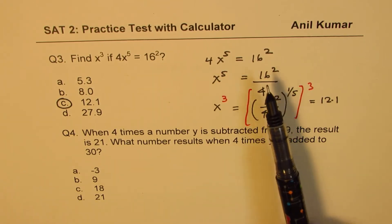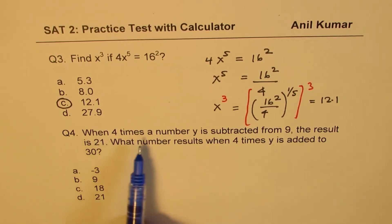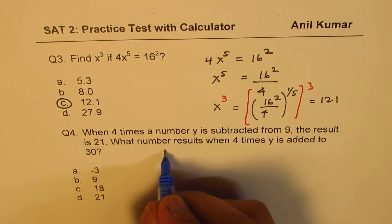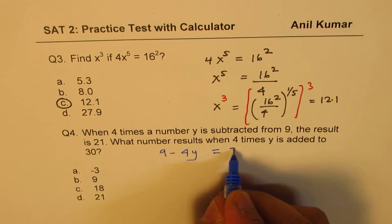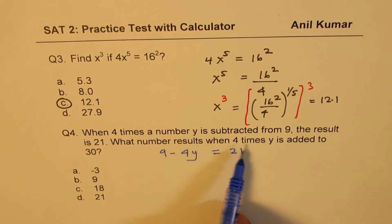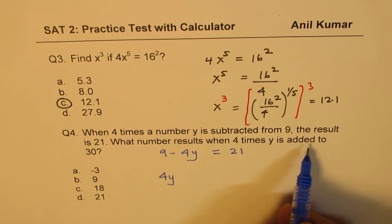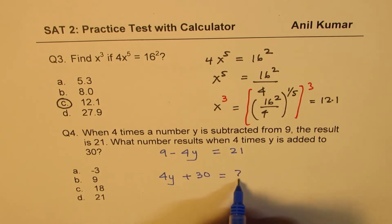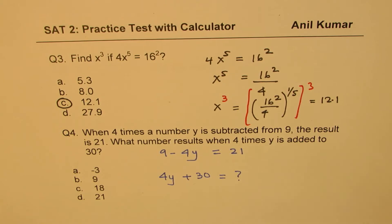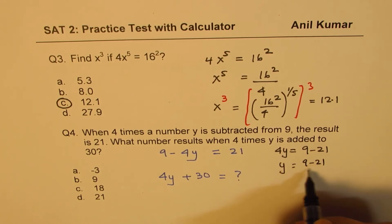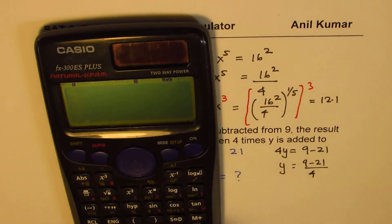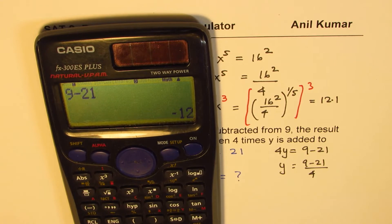Question 4: when 4 times the number y is subtracted from 9 the result is 21, meaning 9 minus 4y equals 21. What results when 4 times y is added to 30? From the first equation, taking 4y to the right side: 4y equals 9 minus 21 equals negative 12, so y equals negative 3.